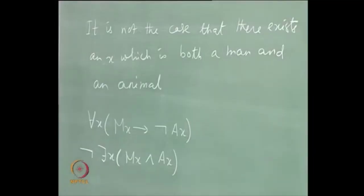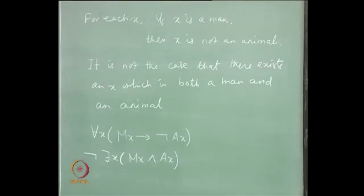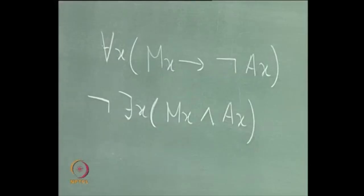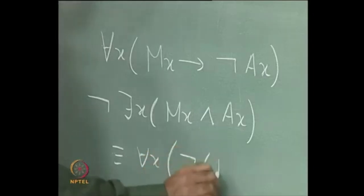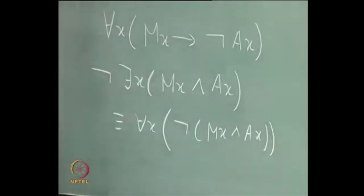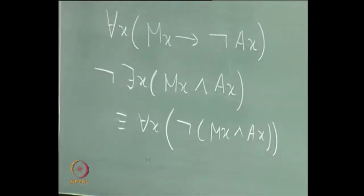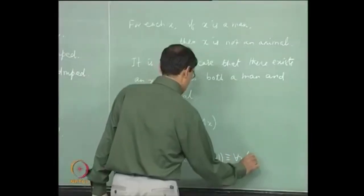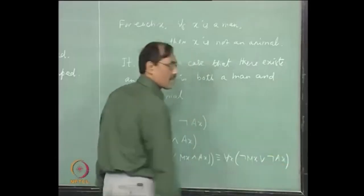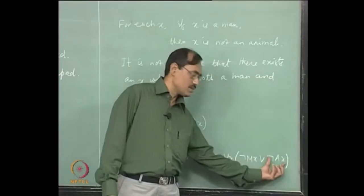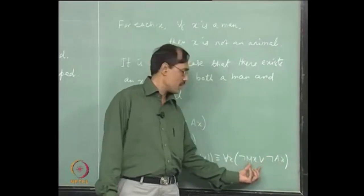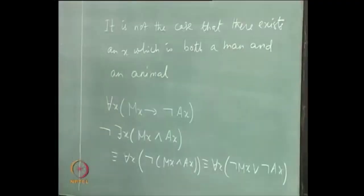Are they telling the same thing? Are they equivalent? Well, you take the 'not' inside by De Morgan. That gives you: for each X, not of (m(X) and A(X)). Now, 'not P or Q' is the same thing as 'P implies Q'. You have P as m(X) here, so m(X) implies not A(X). It is the same thing. Any one of the ways you can proceed — it does not matter.